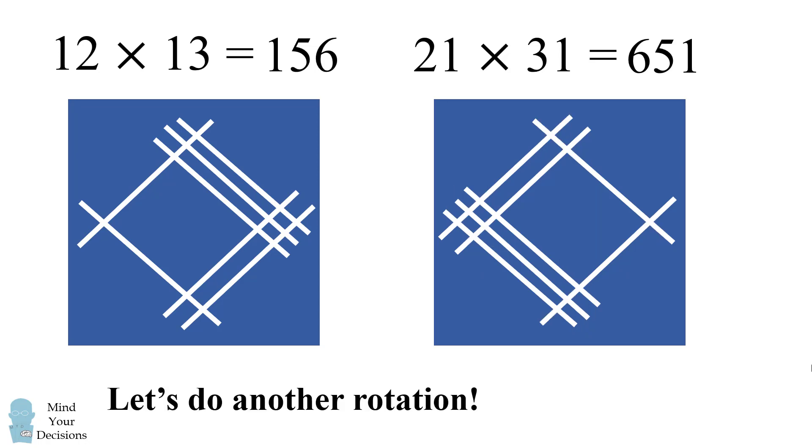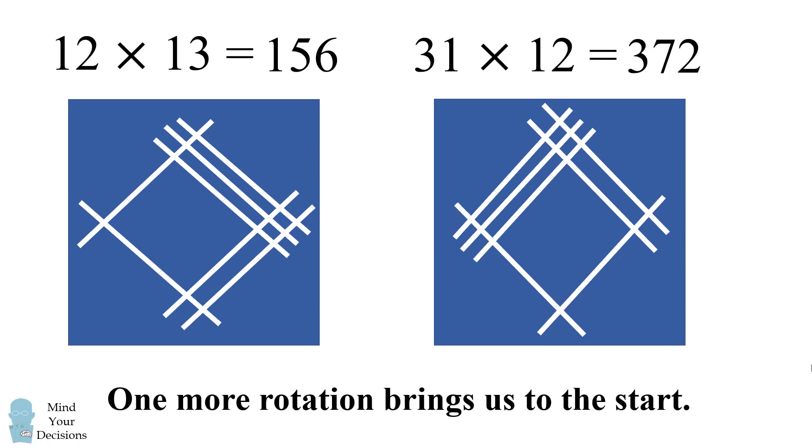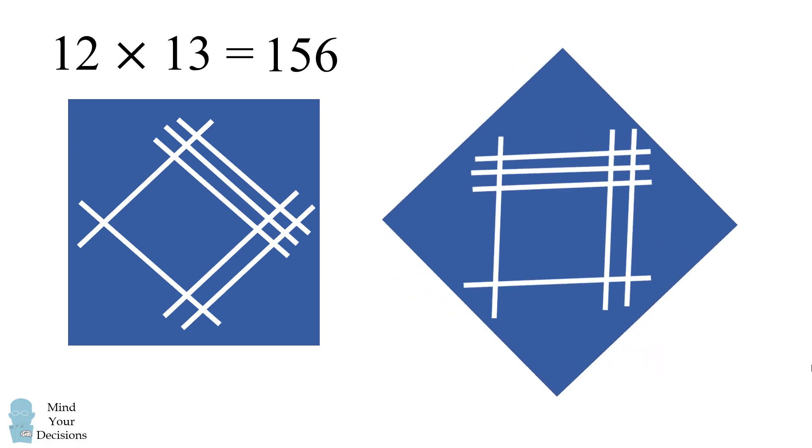We've solved another problem so let's go ahead and do another rotation. We now have another diagram. This will correspond to 31 multiplied by 12. What's the answer to this problem? Well, we'll count these intersections and we end up with 372.